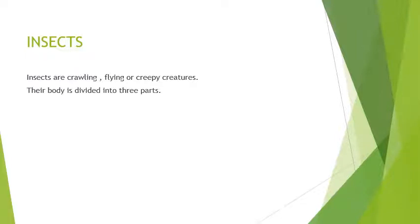Next we have is insects. Insects are crawling, flying, or creepy creatures. So what are insects? Insects are crawling, flying, or creepy creatures. Their body is divided into three parts. The body of the insect is divided into three parts. All insects have six legs. One thing is common in the insects that they have six legs. They have a pair of antennae on their heads. On their head, they have a pair of antennae. Pair means two. Two antennae they are having on their heads.